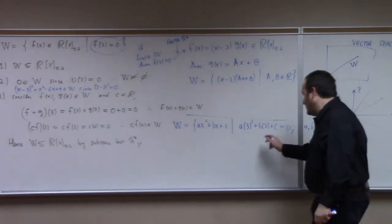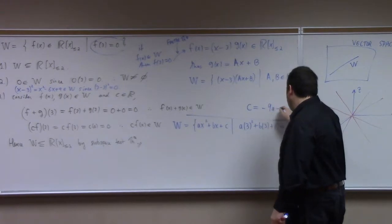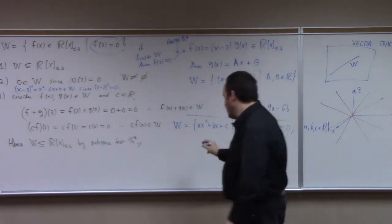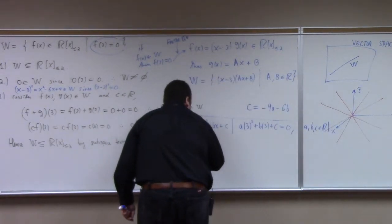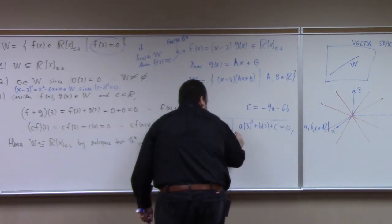And you see what happens is you get this equation that c is equal to minus 9a minus 6b, right? And so then you can put that over into here like this and you get ax squared plus bx plus, well, c is what?